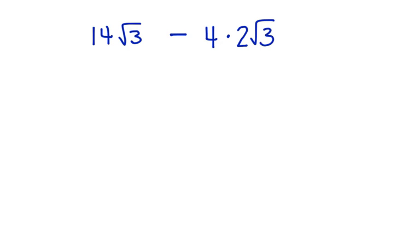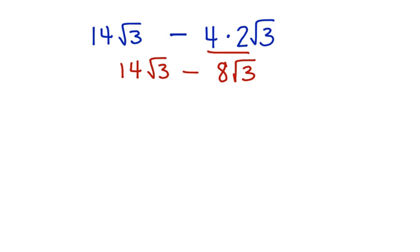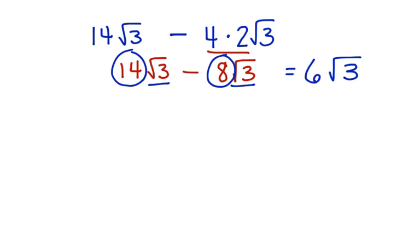Here's what we have: 14 square roots of 3 minus 4 times 2 square roots of 3. We need to take care of this first — 4 times 2 is 8, so we have 8 square roots of 3. Now we bring down the 14 square roots of 3, giving us 14 square roots of 3 minus 8 square roots of 3. These are our like terms. 14 minus 8 is 6, so our answer is 6 square roots of 3.